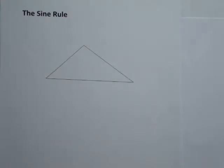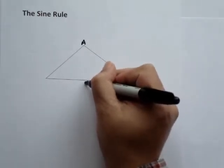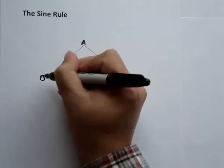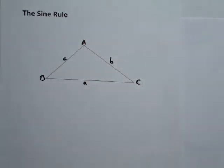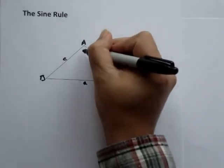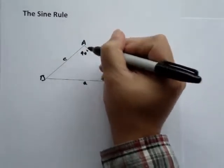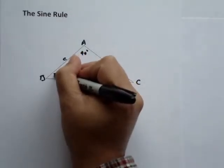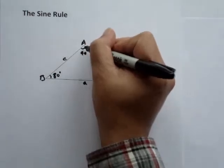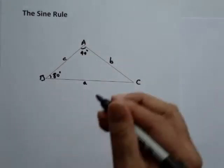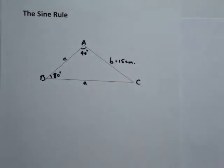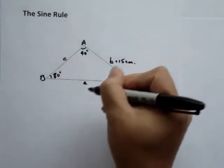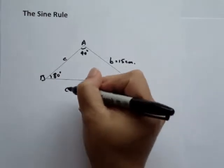Here we're going to use the sine rule. We're given a triangle with angle A, side a, angle B, side b, angle C, and side little c. We're told that angle A is 40 degrees, angle B is 80 degrees, the length of side B is 15 cm, and we're told to find little c — that's the length of side c.